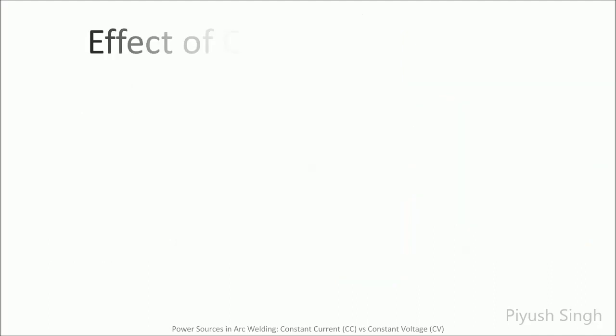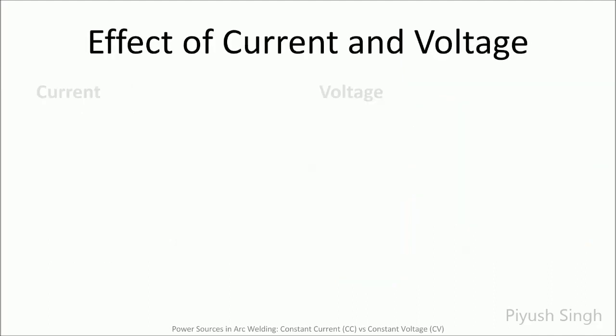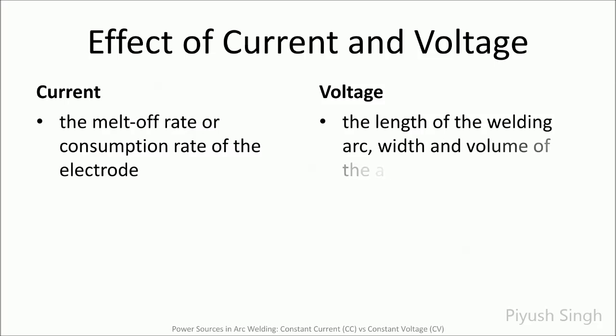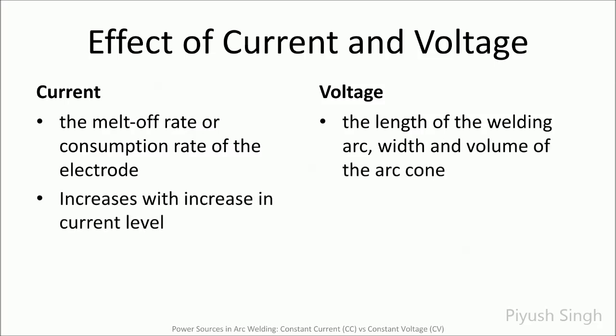A constant current power source will maintain current at a relatively constant level regardless of fairly large changes in voltage, while a constant voltage source will maintain voltage at a relatively constant level regardless of fairly large changes in current. Before discussing these further, it is important to understand the role of both current and voltage in arc welding. Current controls the melt-off rate, or consumption rate, of the electrode — whether it is a stick electrode or wire electrode. The higher the current level, the faster the electrode melts. The lower the current, the lower the melt-off rate.